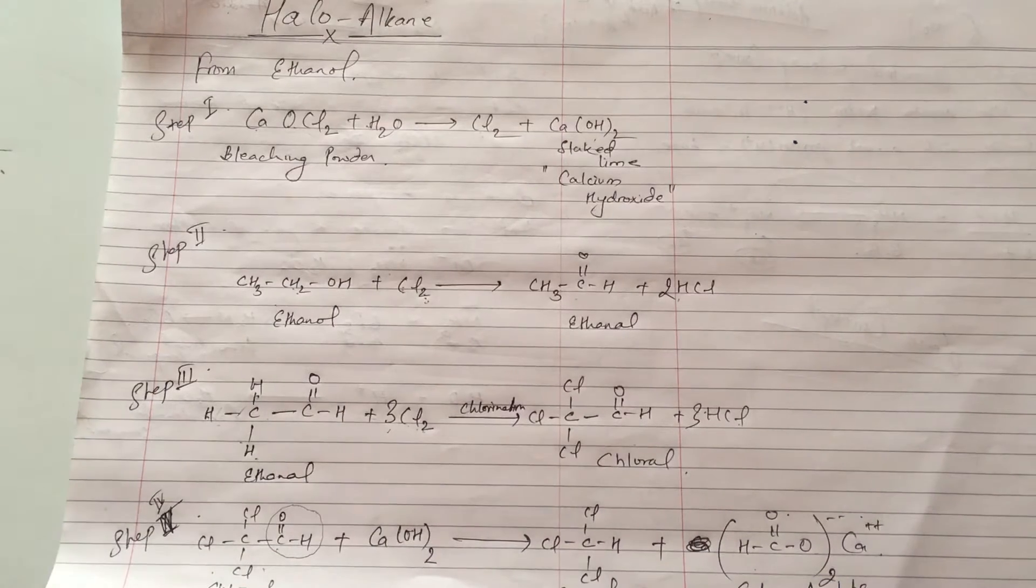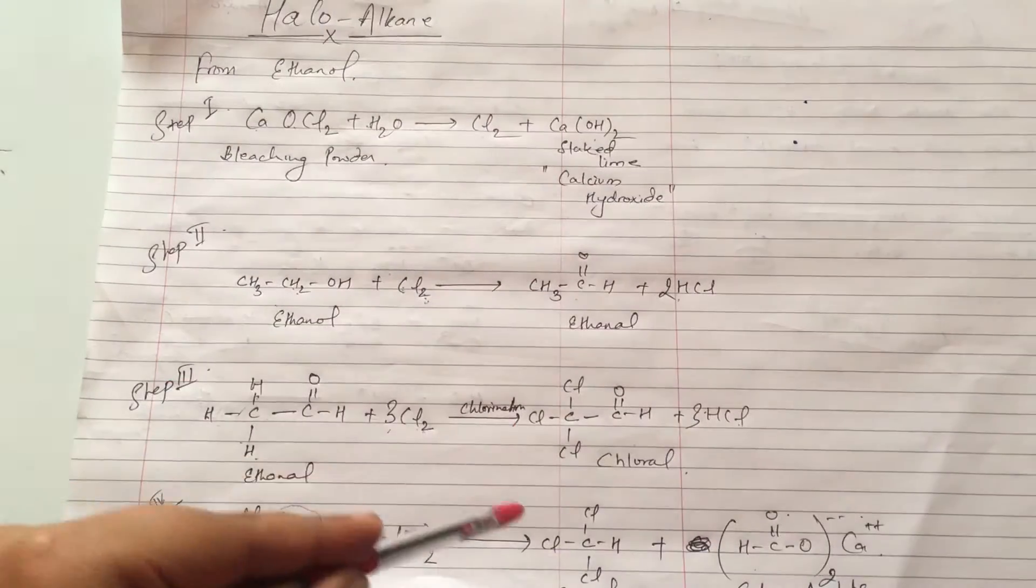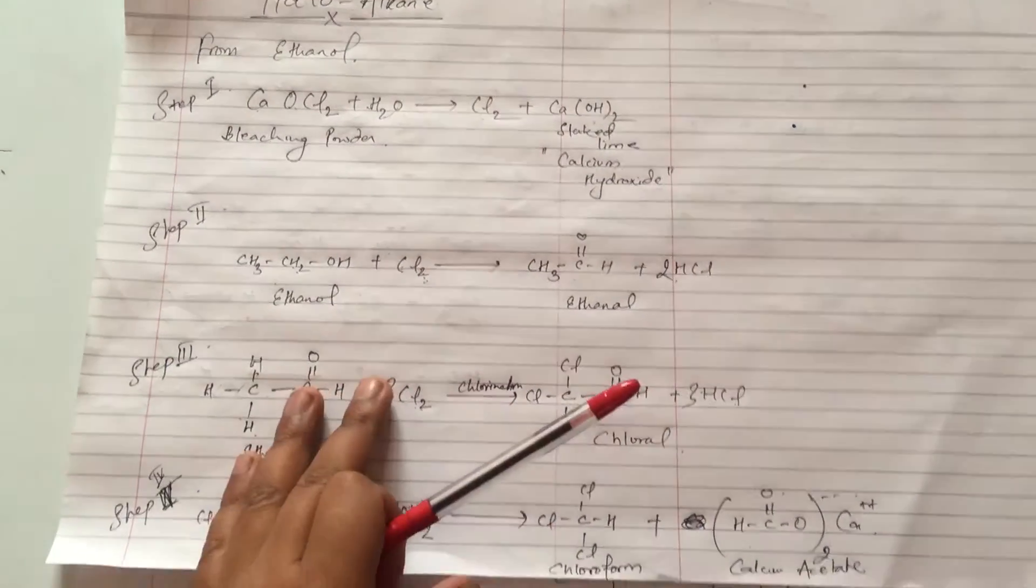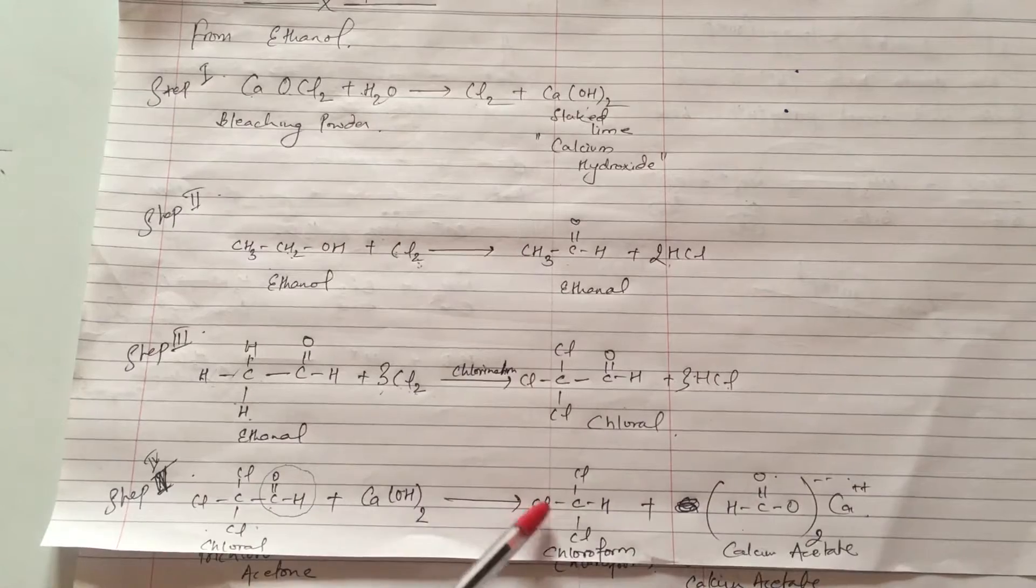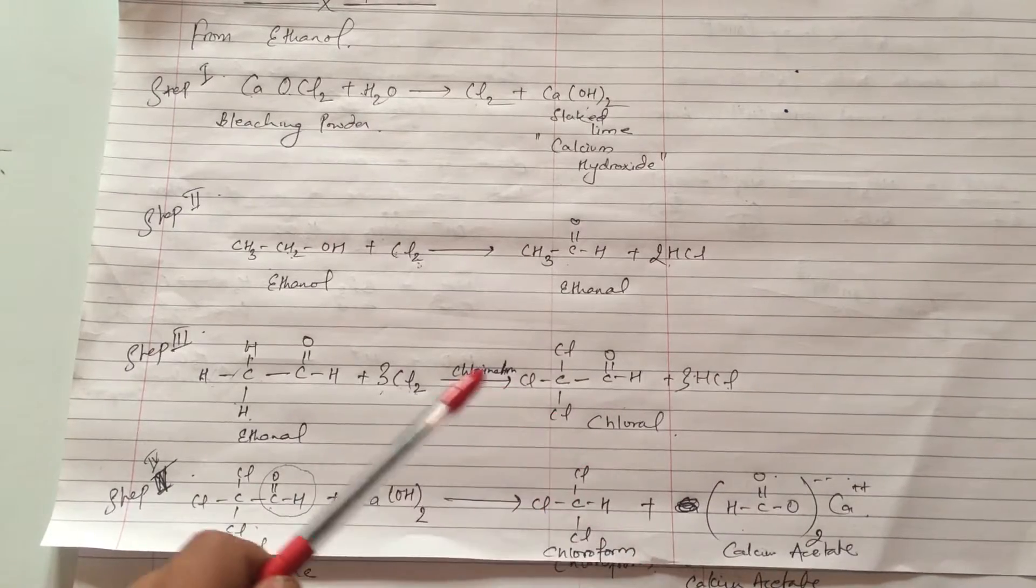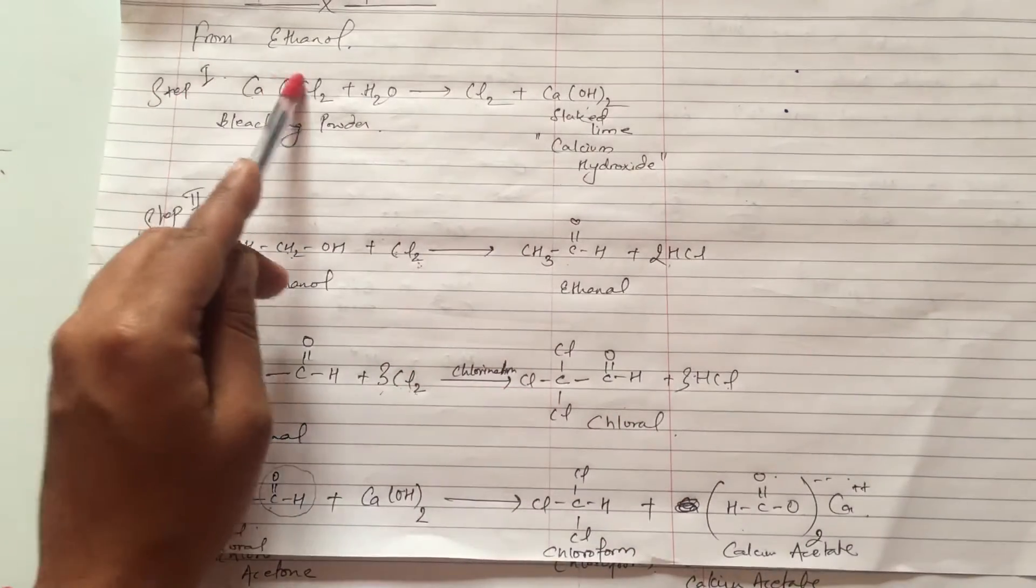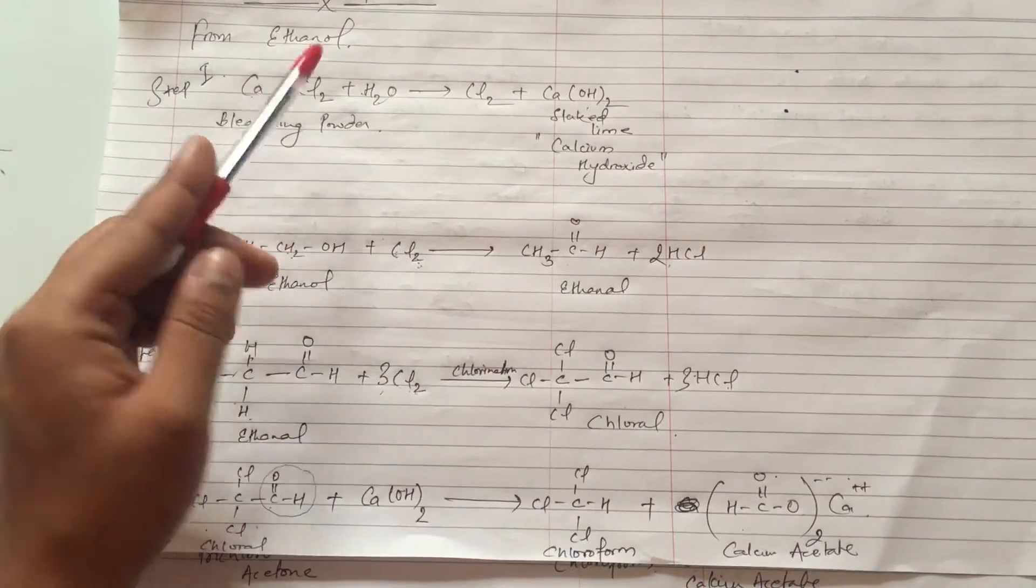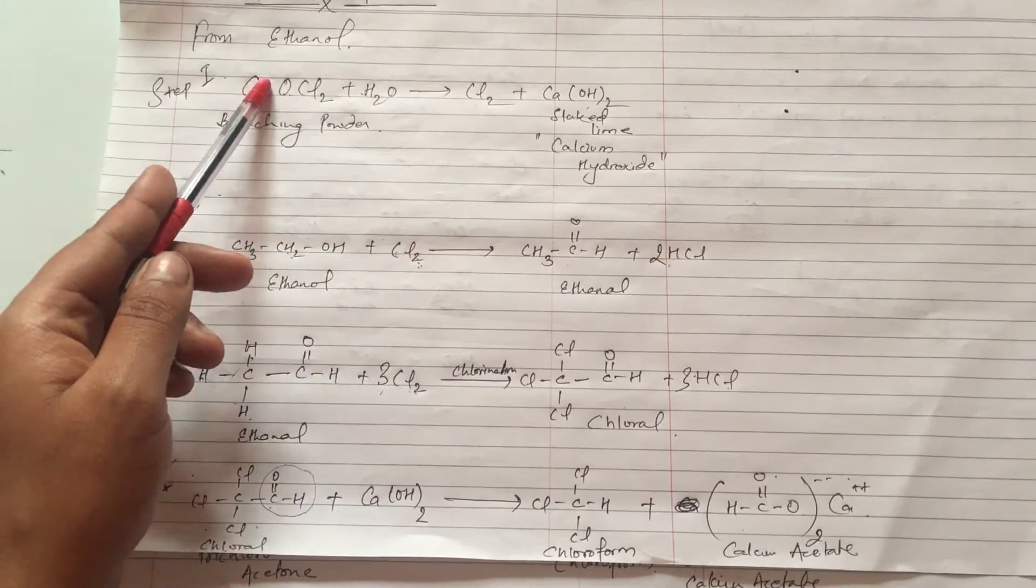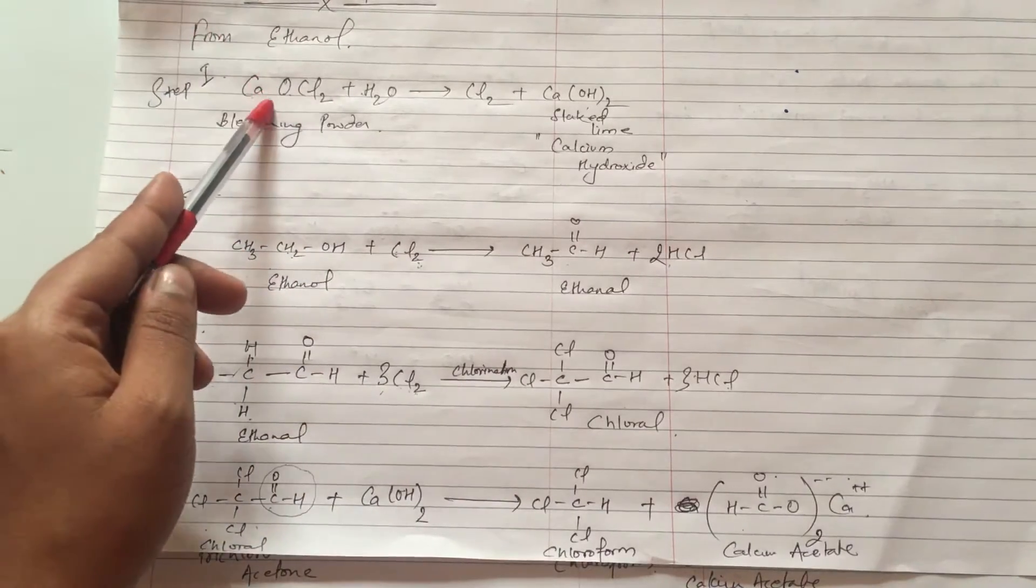Well, in today's class we are going to learn about lab preparation of chloroform. Chloroform has the general formula CHCl3. This is the first time we will be able to treat ethanol. So ethanol is treated with bleaching powder.